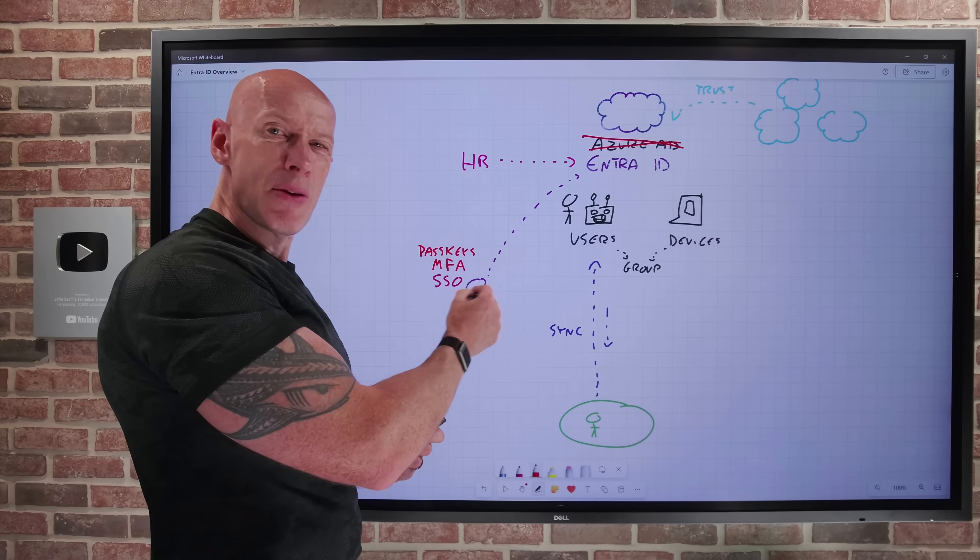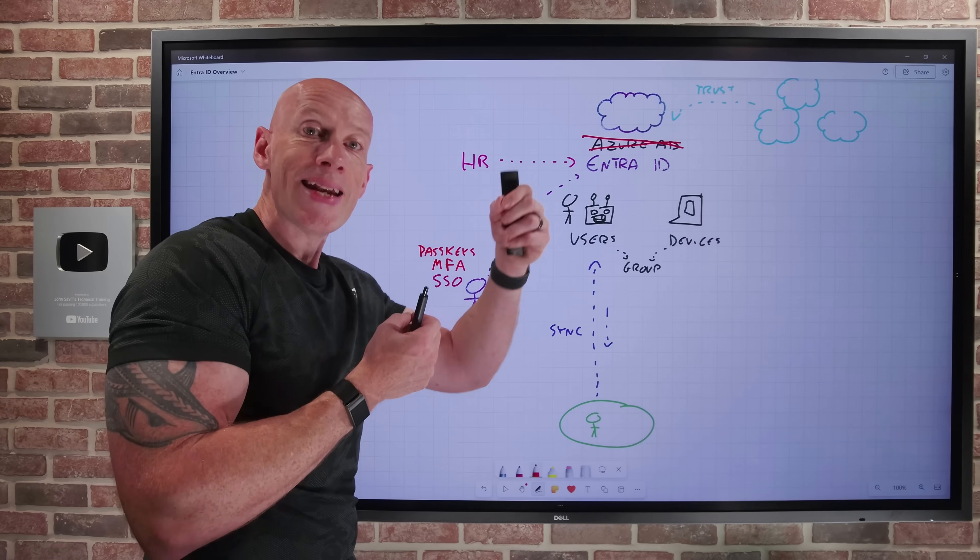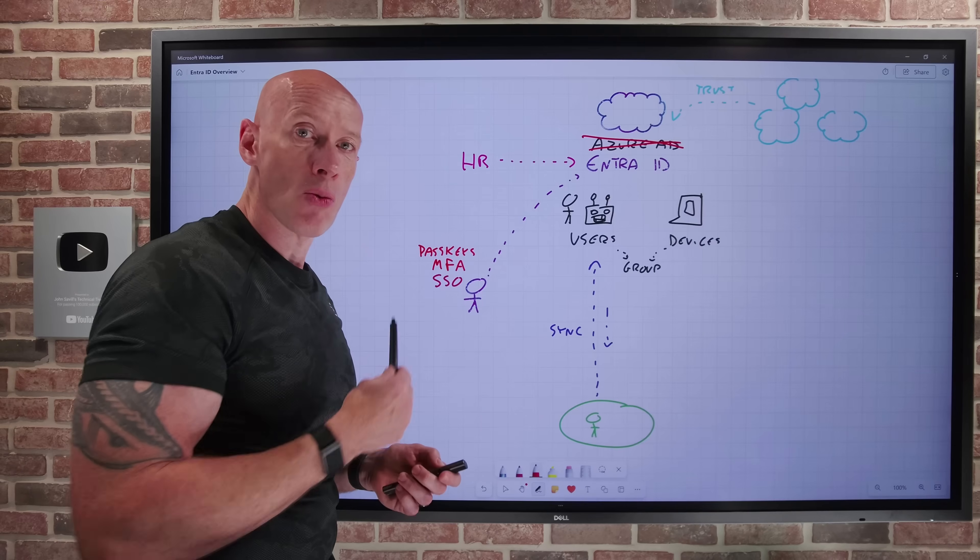I can even protect sensitive, important roles with just in time. I only get permission when I need it with things like privileged identity management, and I can need a higher, stricter form of authentication.